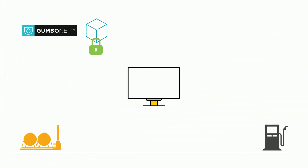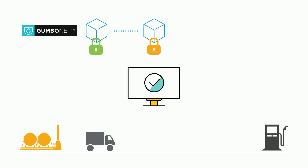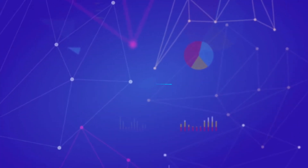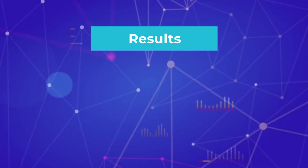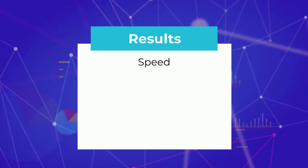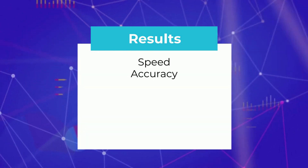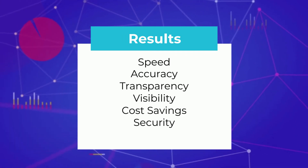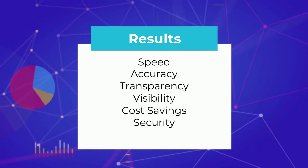Now let's see GumboNet in action. As events occur between counterparties, GumboNet gathers the data required to verify the terms of the contract that they share, determine the transactional value, and records it all in the blockchain. The results for transactional counterparties using GumboNet are speed, accuracy, transparency, visibility, cost savings, security, and most importantly, trust.